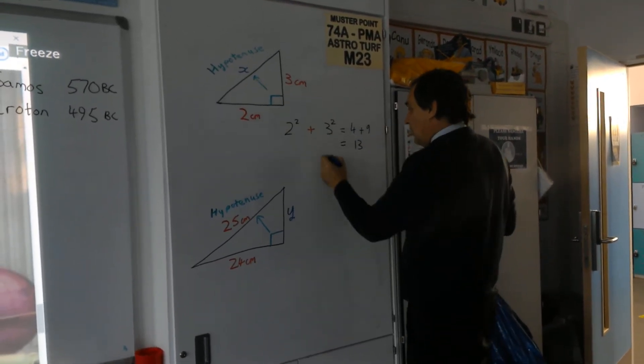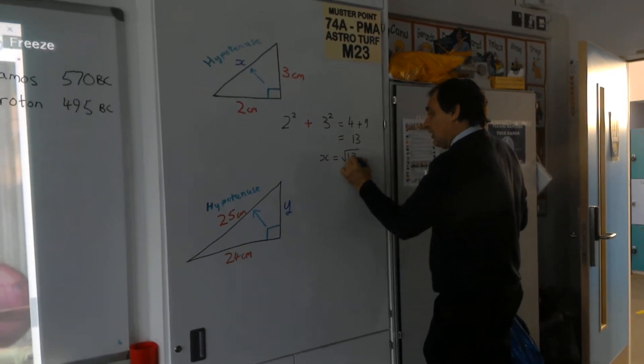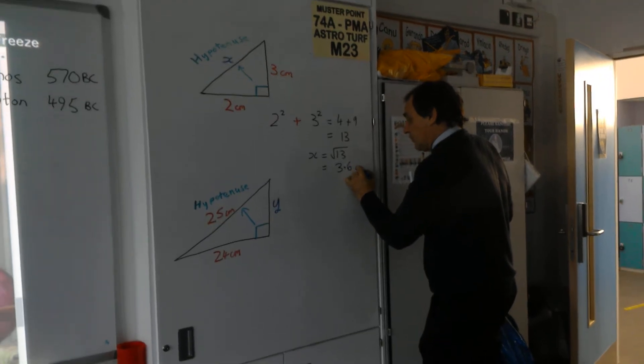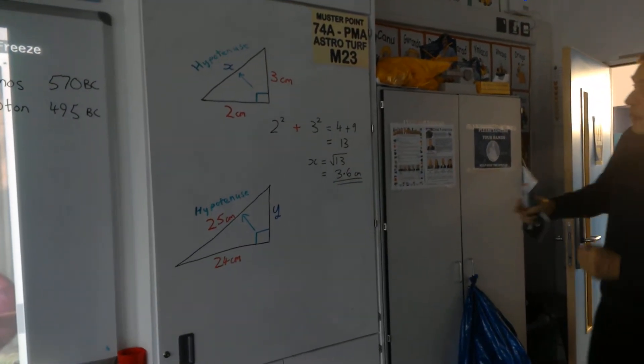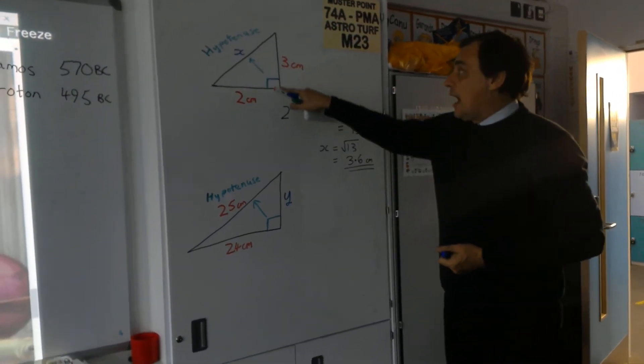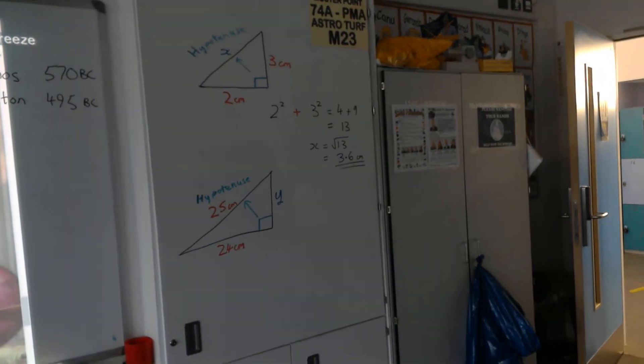Now, to find out x itself, I would find out the square root of 13, which would give me an answer of 3.6 centimetres. So x would be 3.6 centimetres. I've done that by squaring that side, squaring that side, and adding them together. And that gives us the hypotenuse once we've square rooted it.